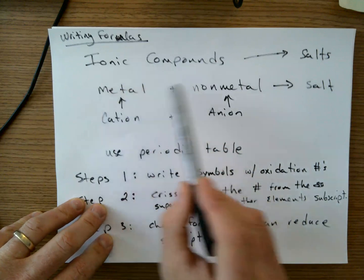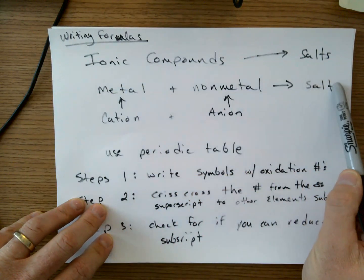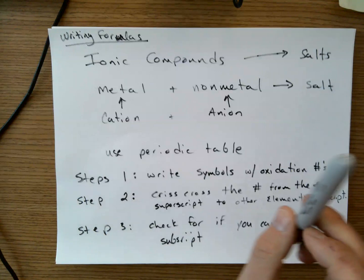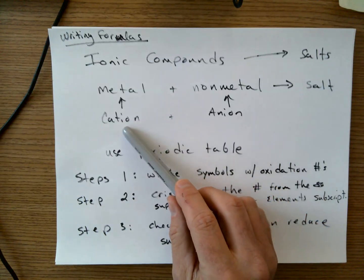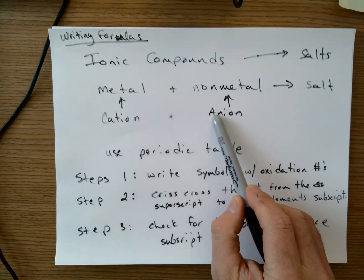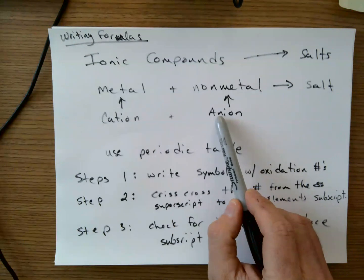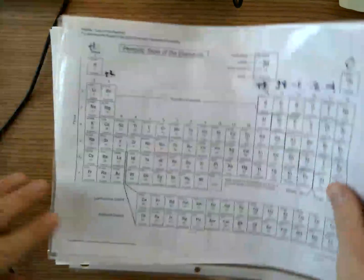What makes an ionic compound is a metal and a nonmetal. That creates the salt or the ionic compound. It's a metal and a nonmetal. The metal is the cation. It has a positive charge. The anion is the negative charge, nonmetal. We really need to use the periodic table for this.